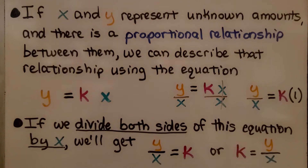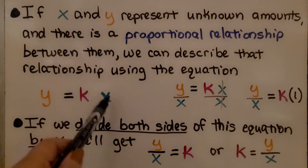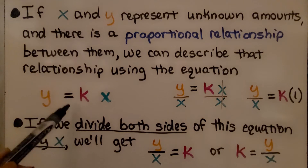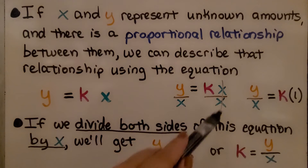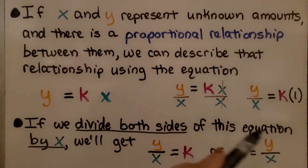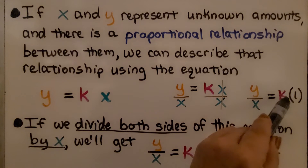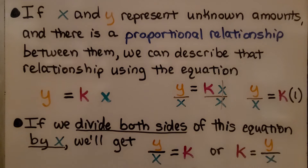If x and y represent unknown amounts and there is a proportional relationship between them, we can describe that relationship using the equation y = kx, where k is multiplied to x. If we divide both sides of this equation by x, we get x over x, which equals 1. By the identity property, k times 1 is just k. So we get k equals y over x.